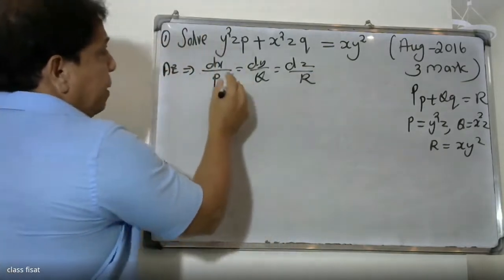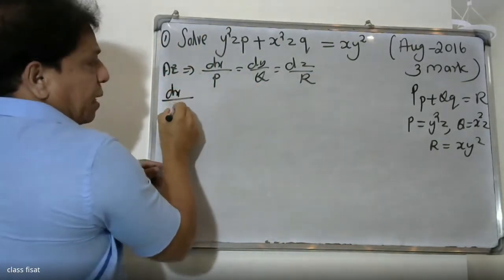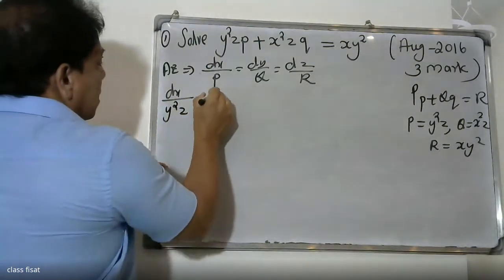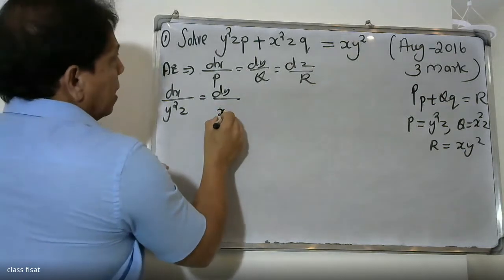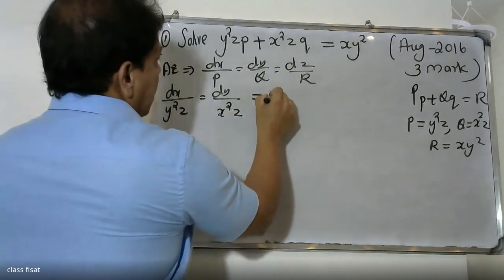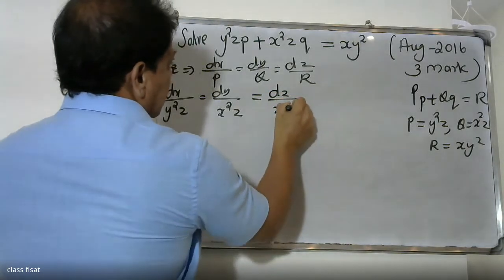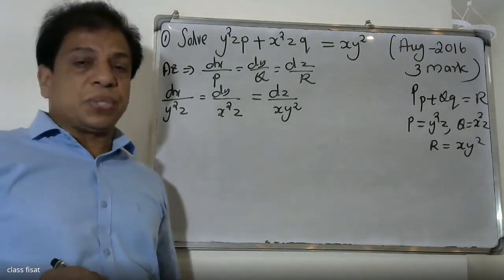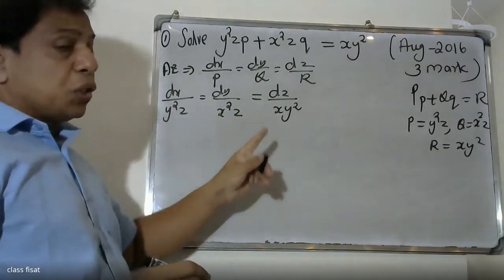Now for p and r, we substitute here. Our dx divided by y-squared, dy divided by x-squared, dz divided by x y-squared. We write the values — substitute into the first ratio, second ratio, third ratio.